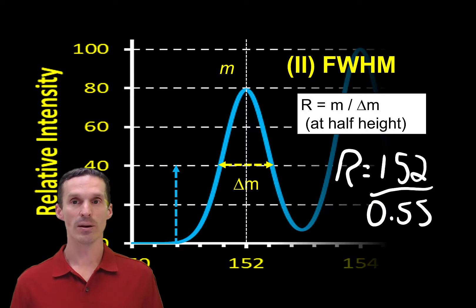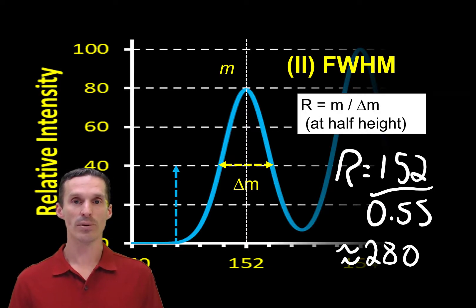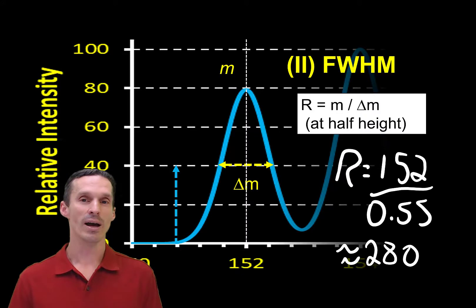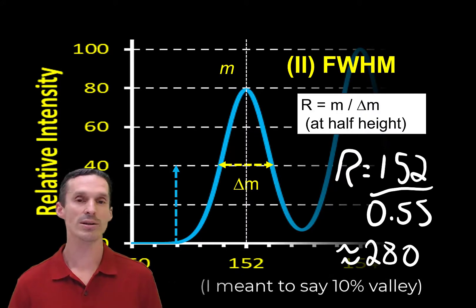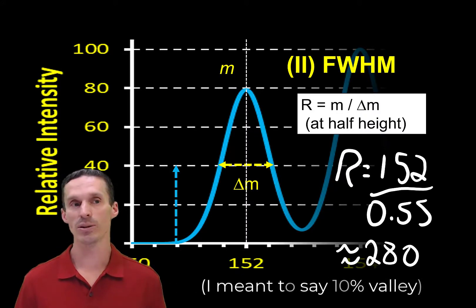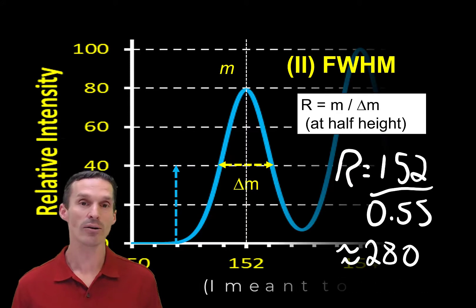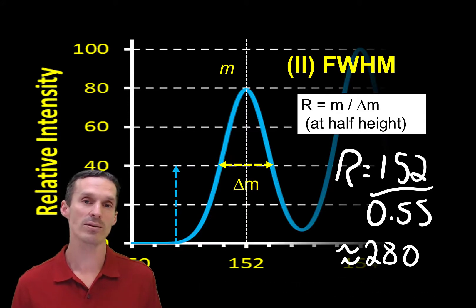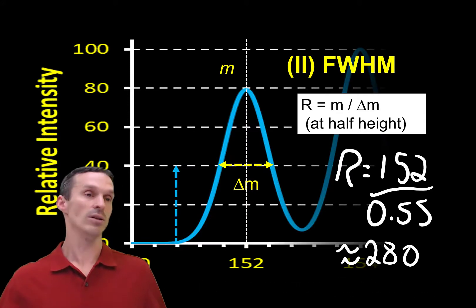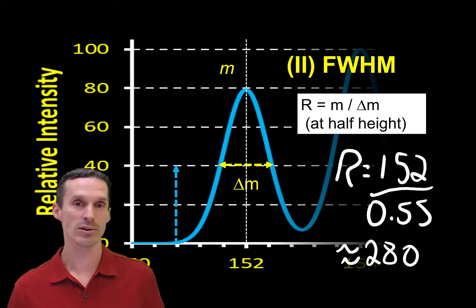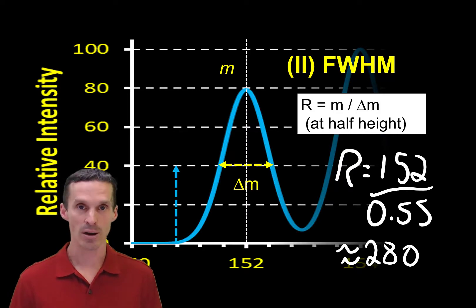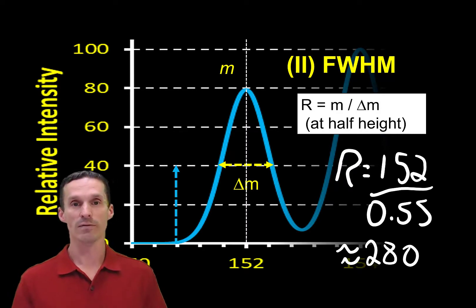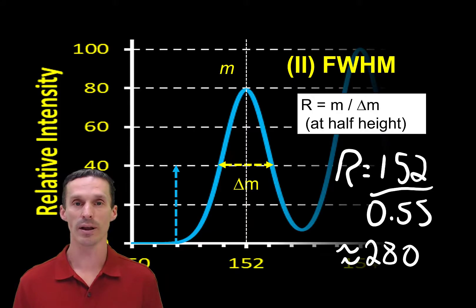So that's the number we get here. Notice that the number isn't even the same as with the 10% valley definition, so there is a relationship between the two. You need to know how you're defining resolution and not just say 'the resolution is X.' Usually people say 'resolution [full width at half maximum].' This is the most common one you'll encounter.